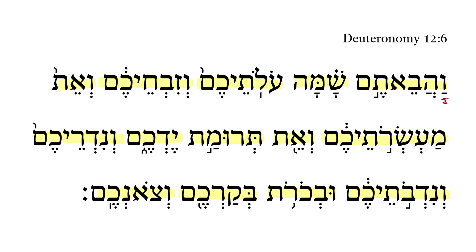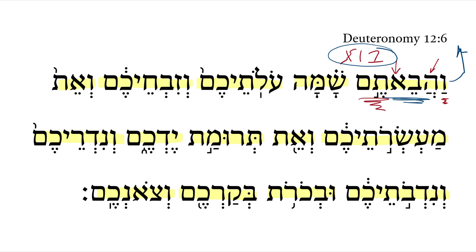First we begin with the vav consecutive. We now get the perfect aspect here. This is the verbal root: bet, vav, aleph. We've got a hiphil perfect — notice the hey performative — and it's a second person masculine plural. This carries on the same nuance as previously. The verbal root means 'to bring' or 'to enter,' but in the causative stem it means 'you shall cause to enter,' meaning 'you shall bring.'